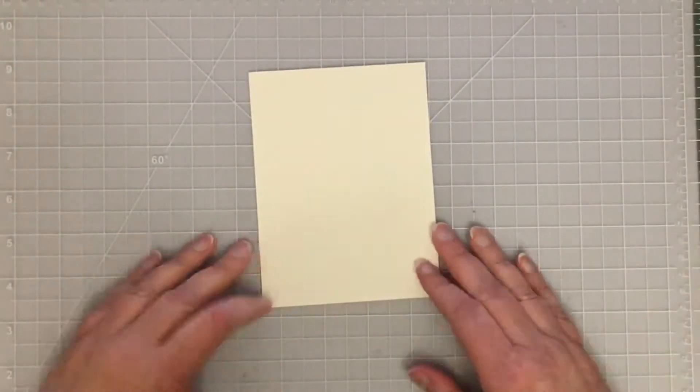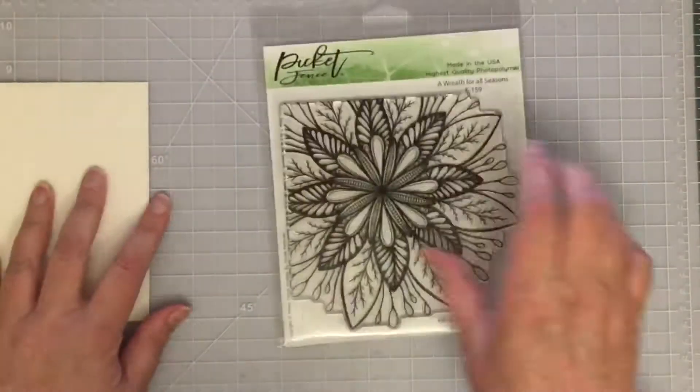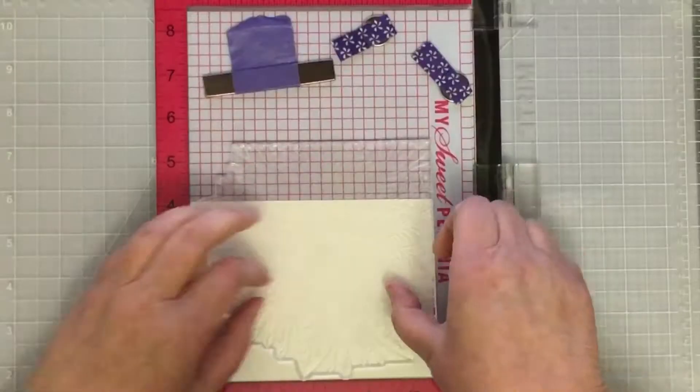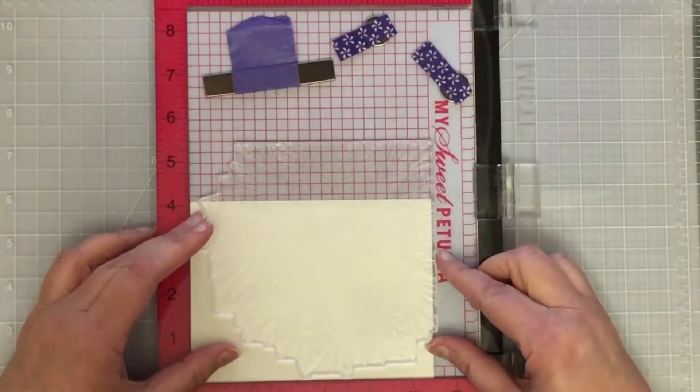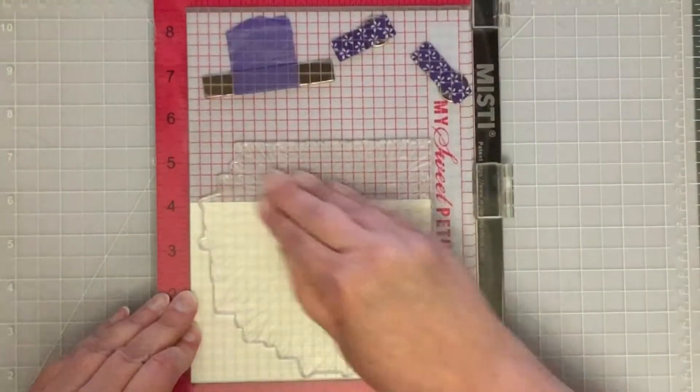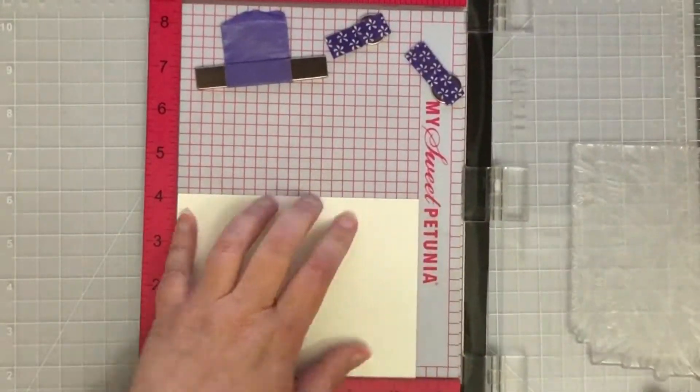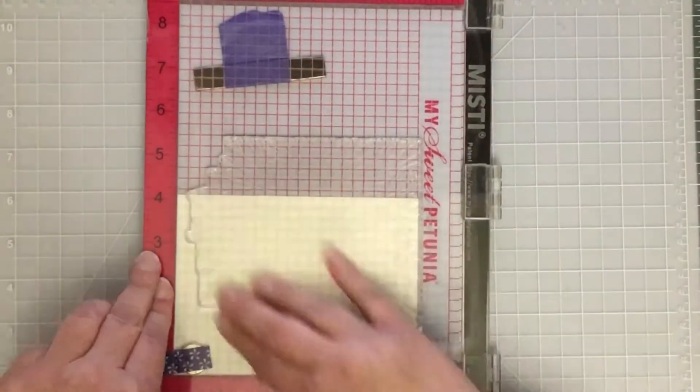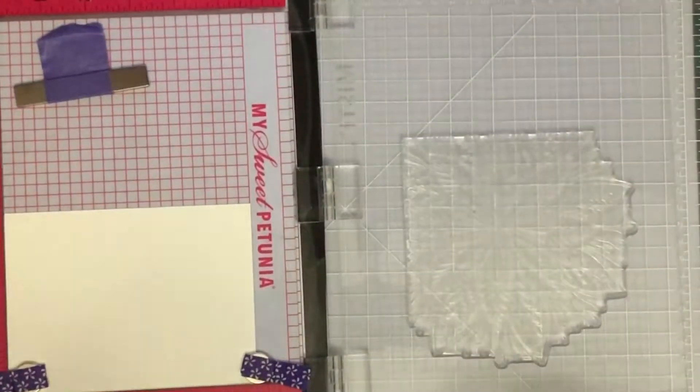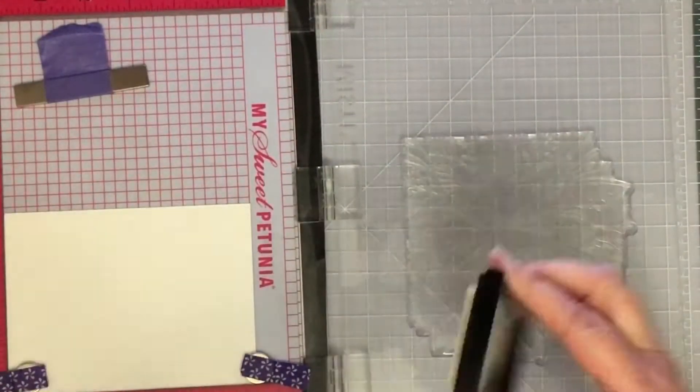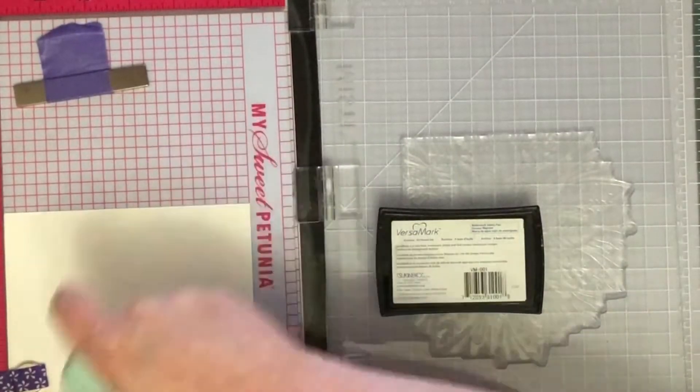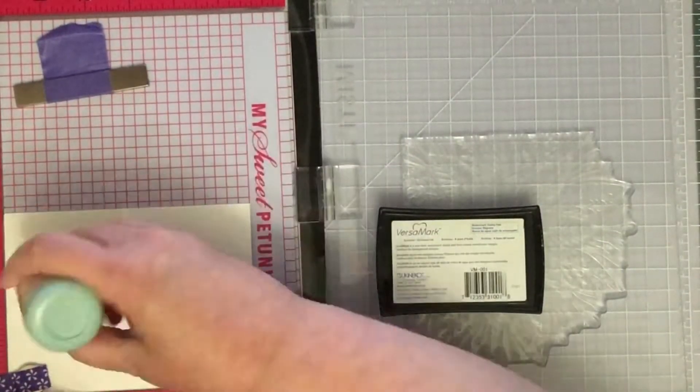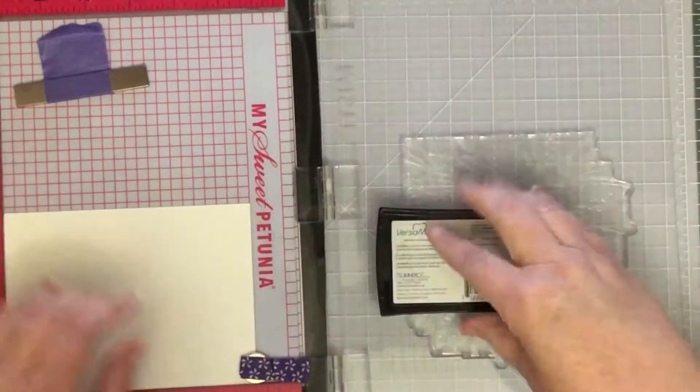I've pulled out this Wreath for All Seasons stamp, a very large stamp that takes up a fair amount of real estate on a standard card front. I'm stamping it onto some watercolor paper, Canson watercolor paper, and prepping it with my powder tool.